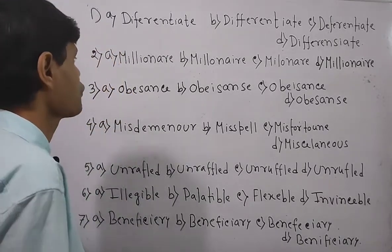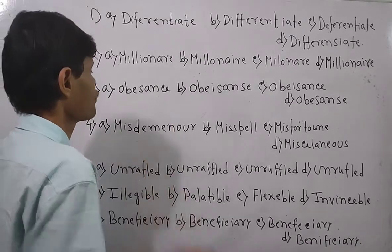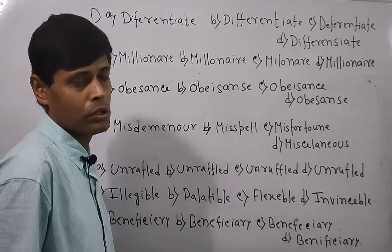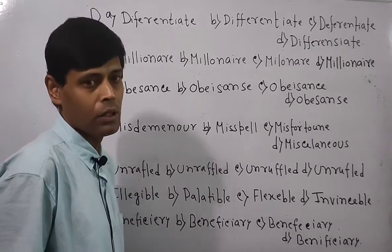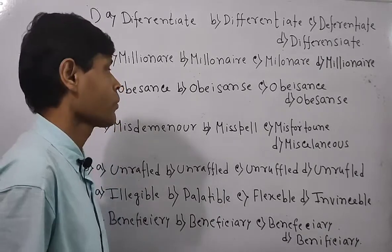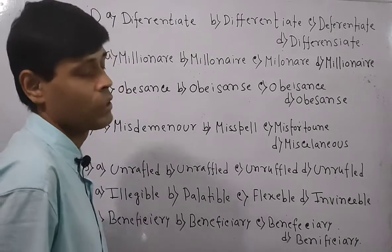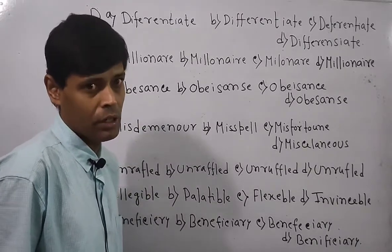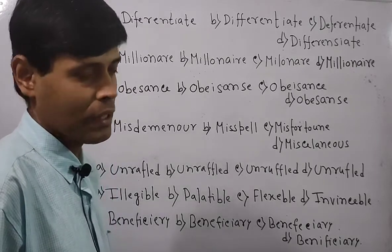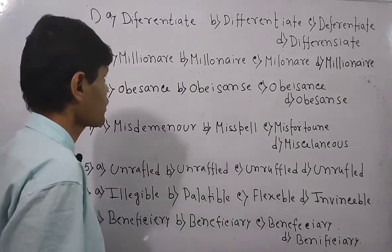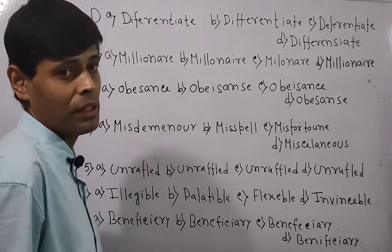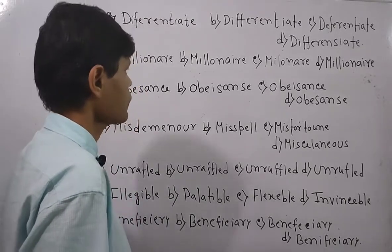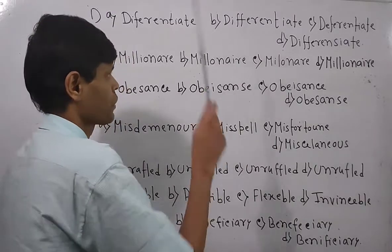The word is 'differentiate.' First of all, you have to spell out the word properly. In the case of the word 'differentiate,' stress is given on the alphabet F — double F must be there. But here, instead of double F, we have written single F. So this is not right. Now, look over the next option.